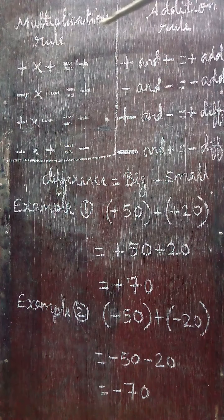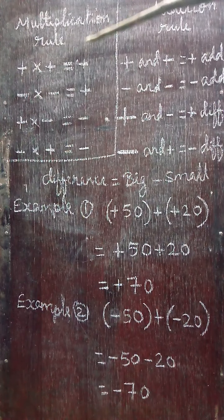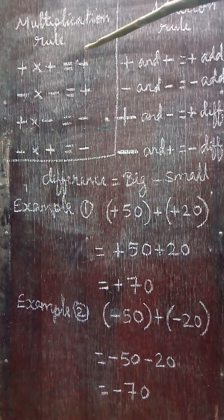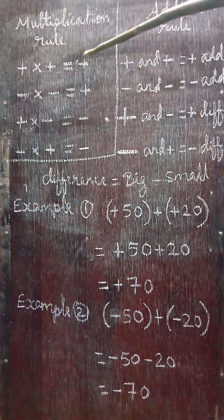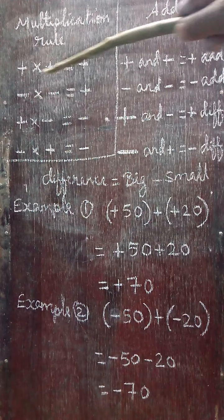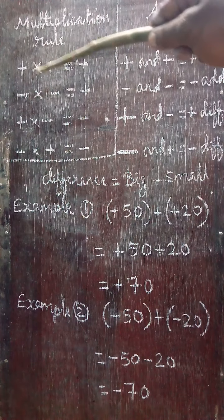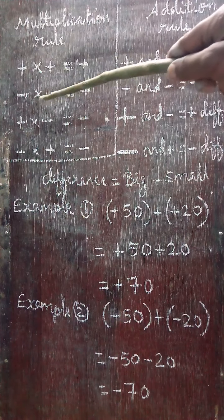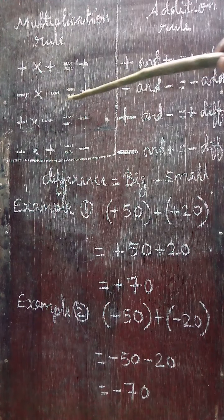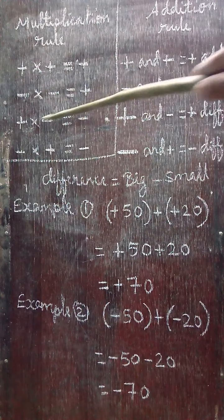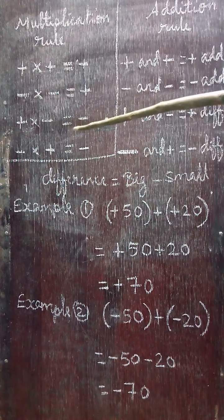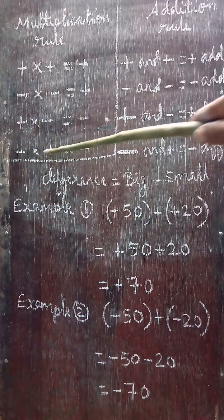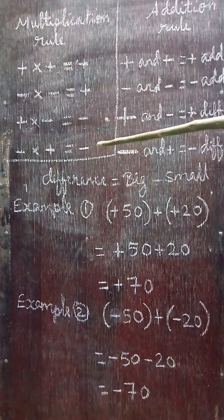This is the multiplication rule used to open brackets. Positive into positive gives positive. Negative into negative gives positive. Positive into negative gives negative. Negative into positive gives negative.